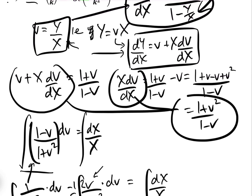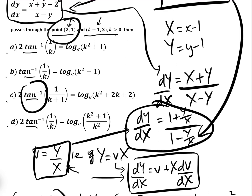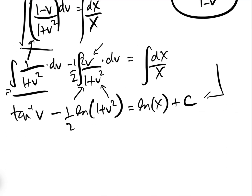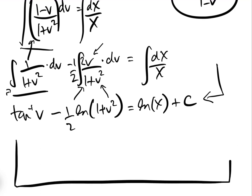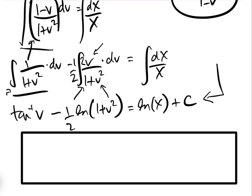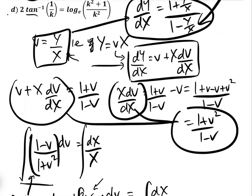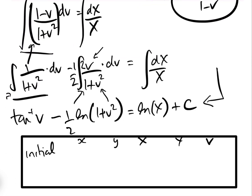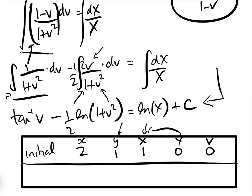Now we use the initial condition, the point (2, 1). We don't need to change back to little x just yet — instead, we use a table. With x = 2, y = 1: big X = x − 1 = 1, big Y = y − 1 = 0, and v = Y/X = 0. Plugging into our equation: tan⁻¹(0) − ½ log(1 + 0) = log(1) + C, which gives 0 − 0 = 0 + C, so C = 0.